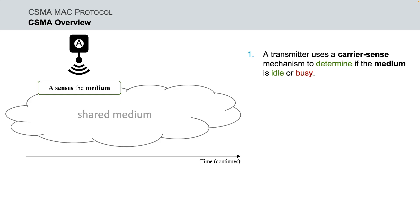Indeed, under CSMA, a transmitting node uses a carrier sense mechanism to sense the shared transmission medium to determine if it is in idle or busy state.